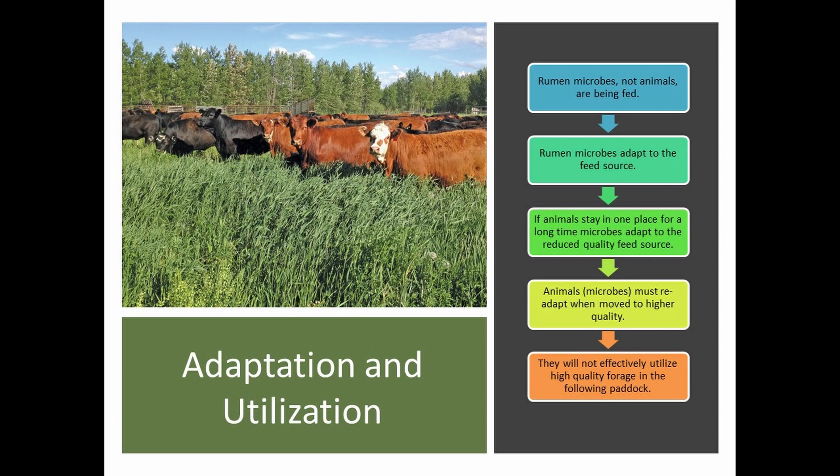Remember, what we are dealing with here are biomes. You're dealing with the rumen microbes, not the animals — they're the ones being fed and have to adapt. If animals stay in one place for a long time, microbes adapt to the reduced quality of feed. Animals must readapt when they're moved to a higher quality feed source, and they will not effectively utilize high quality forage in the following paddocks until these microbes adapt.